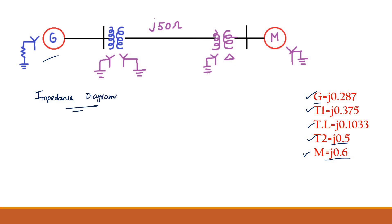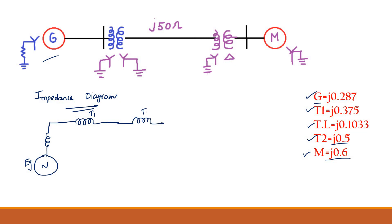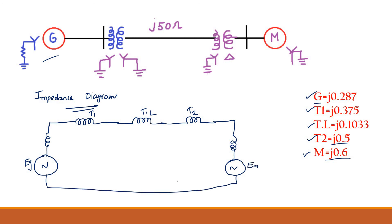The generator is represented as voltage source EG in series with an inductor (impedance). Transformer 1 follows, then the transmission line, then transformer 2, and finally the motor represented as EM in series with its impedance. The impedance values are placed one by one: generator J0.287, transformer 1 J0.375, transmission line J0.1033, transformer 2 J0.5, motor J0.6. This is the complete impedance diagram.